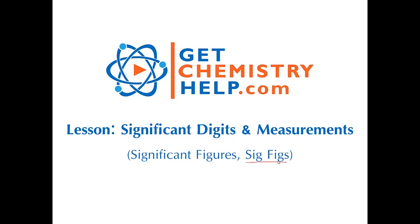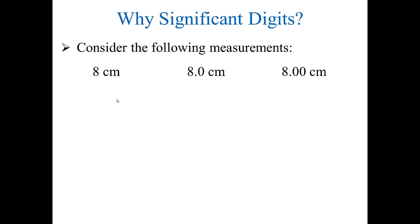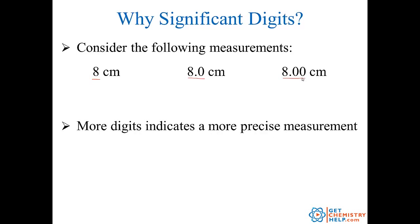So why do we have significant digits in the first place? Well let's look at these three different measurements here. The one on the left is 8 centimeters, the one in the middle is 8.0 centimeters, and the one on the far right is 8.00 centimeters. The first measurement is only precise out to the ones place, the next one out to the tenths place, and the final one out to the hundredths place. So more digits indicate a more precise measurement.